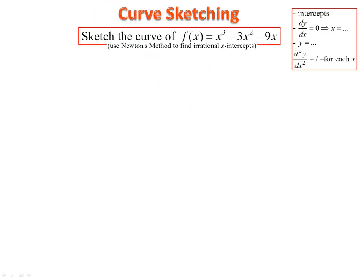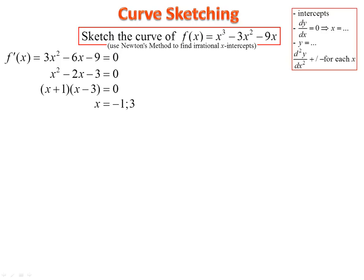Let's try the first example — that's a cubic. If you take out a common x, you'll get a quadratic which has irrational zeros. You could use the quadratic formula to find those zeros, but in this course, use Newton's method because we need to practice it. Differentiate, equate to zero. Dividing through by three to simplify the equation is allowed. Factorize, and there are the x-values.